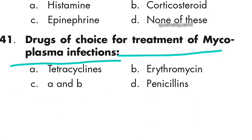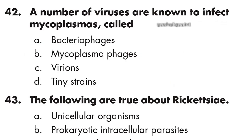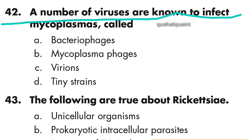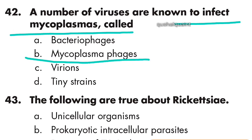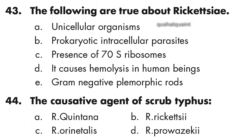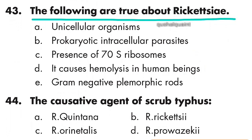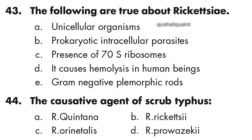Question 41: The drug of choice for treatment of mycoplasma infection is tetracycline and erythromycin. Option C, both A and B, is right. Question 42: A number of viruses known to infect mycoplasma are called mycoplasma phages. Option B is right.